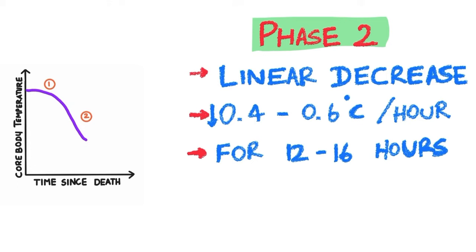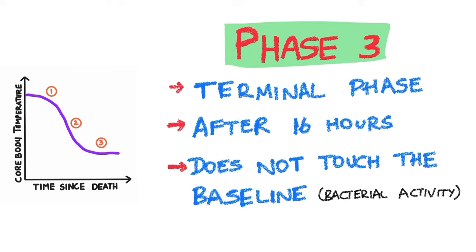There is then a terminal plateau phase — phase 3 — occurring after 16 hours. The body temperature does not touch the baseline because of ongoing bacterial activity inside the body due to putrefaction. Bacterial activity produces heat, which is why the body temperature never reaches the baseline.